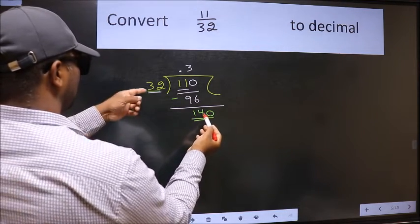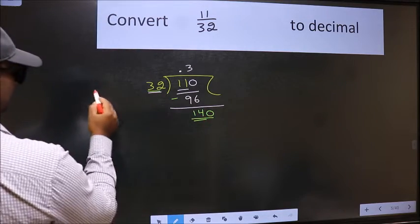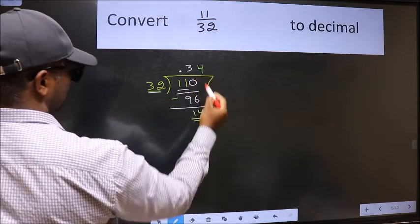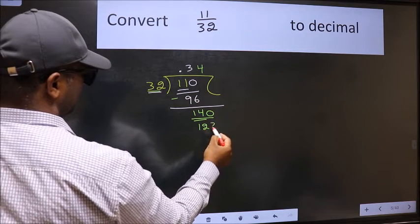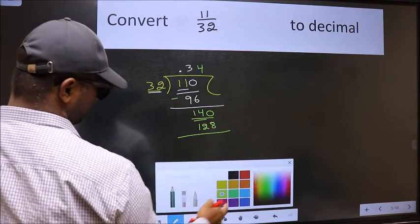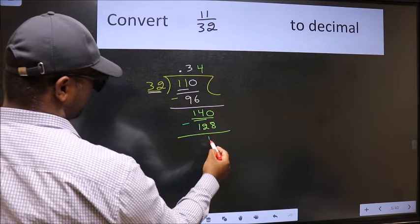A number close to 140 in 32 table is you take 32 4s. We get 128. Now, we should subtract. We get 12.